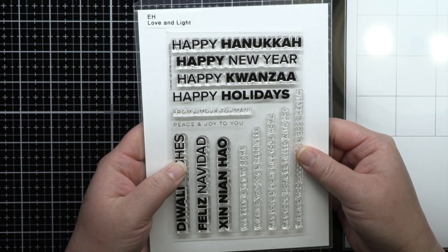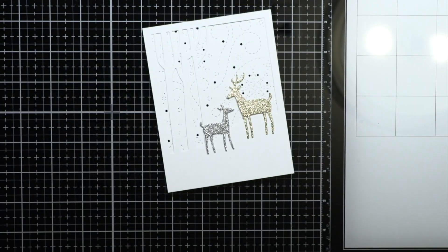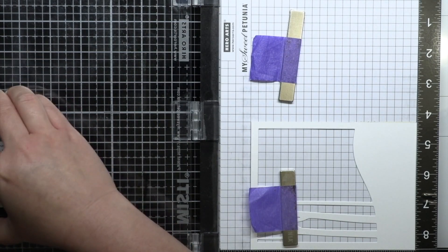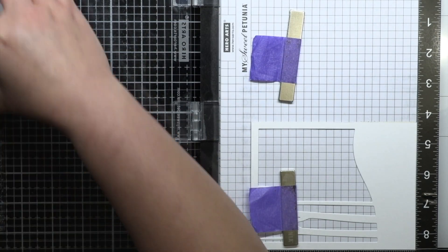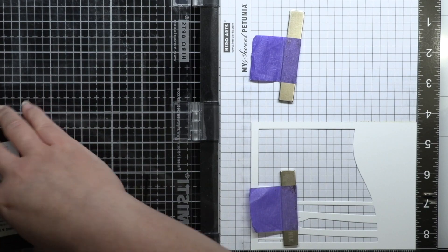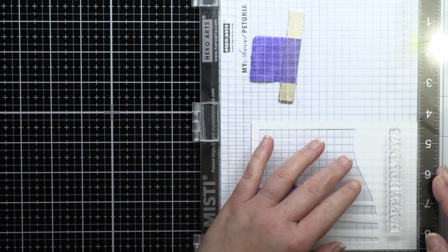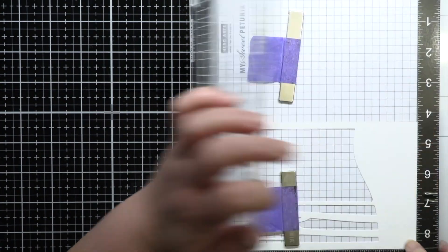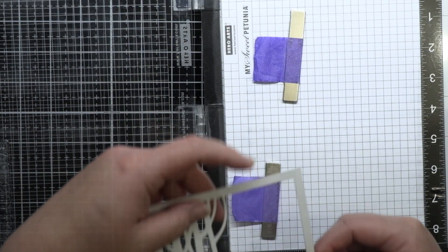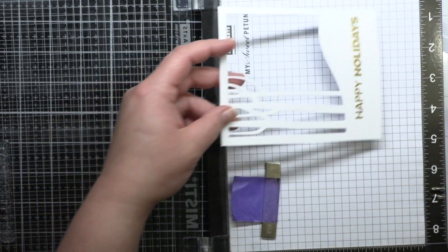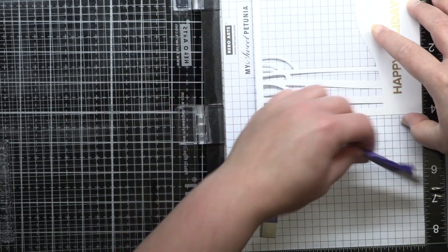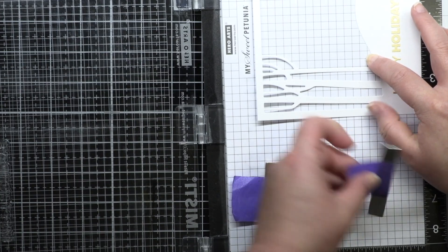Next I line up two sentiments from Love and Light onto my MISTI to stamp on the bottom of the Birch Tree cover plate die. I have one sentiment on the left side of my MISTI and the other on the right, so that I can save time which is a great trick for mass-producing. I stamp the first sentiment with embossing ink and heat emboss it with gold embossing powder. Then I place the panel back in my MISTI, stamp the other sentiment with embossing ink, and heat emboss it with silver embossing powder.